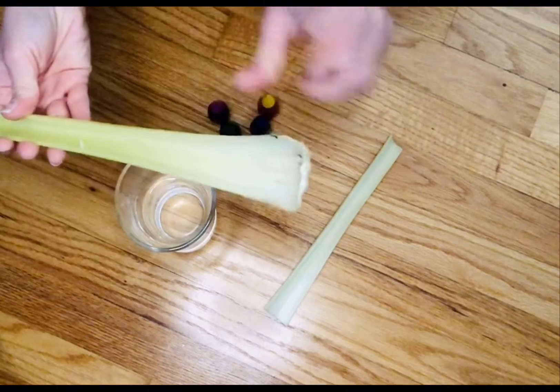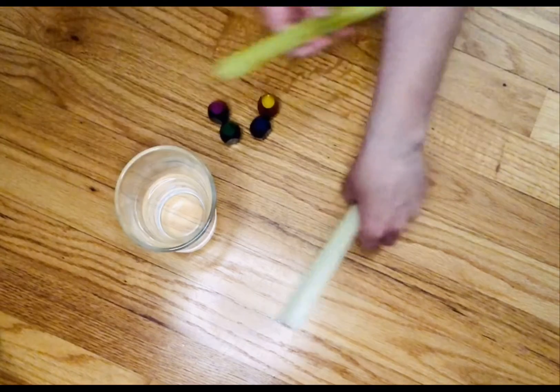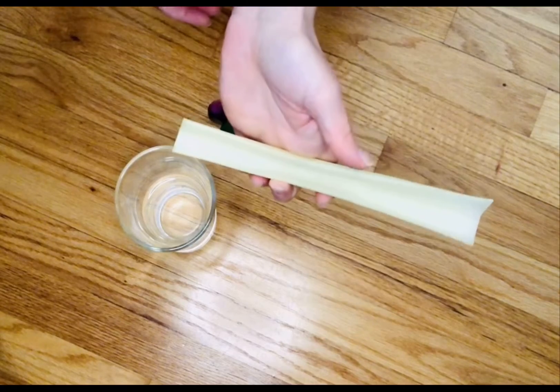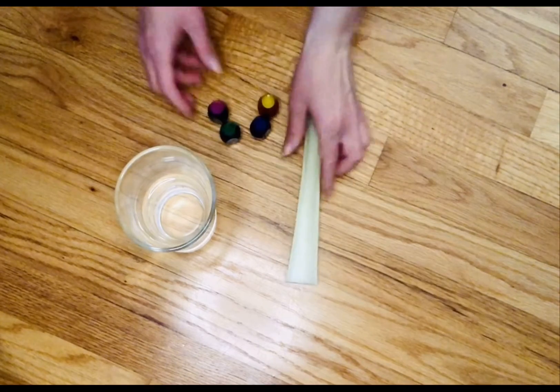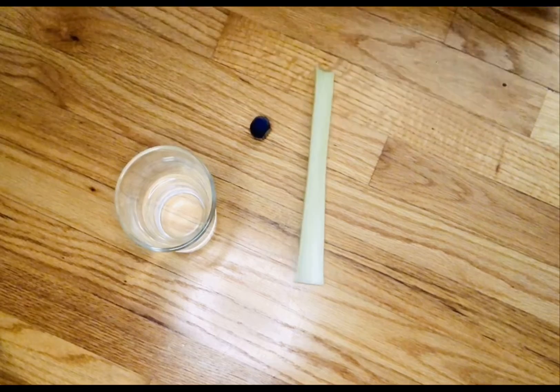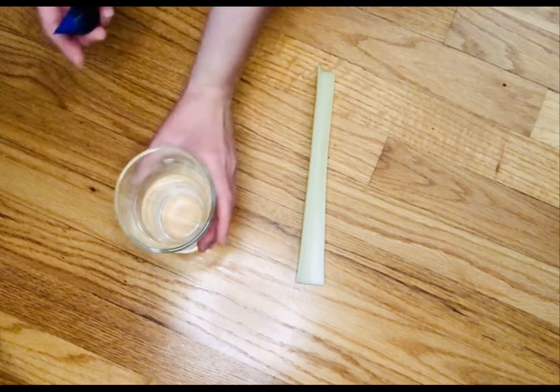I recommend having an adult cut off the ends of your celery for you. So I have one right here that I already cut off, and I am going to do the blue food coloring for this example.